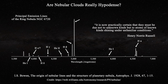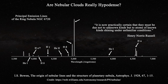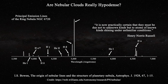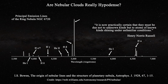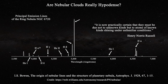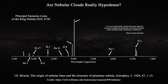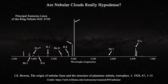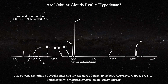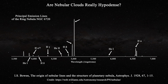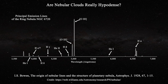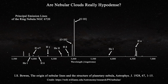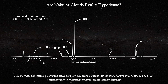Russell stated: 'It is now practically certain that they must be due not to unknown kinds, but to atoms of known kinds shining under unfamiliar conditions.' Russell went on to suggest that the cause must be low density. This explanation has now been accepted without question for nearly a hundred years. In his classic paper, Bowen would assign two of the most important lines in planetary nebulae to forbidden transitions of oxygen III. These transitions were considered spin-forbidden because they involved a change in electron spin as a transition is made from a higher electronic orbital to a lower one.